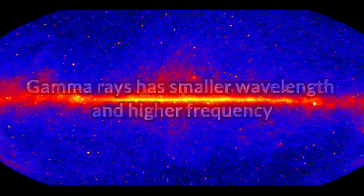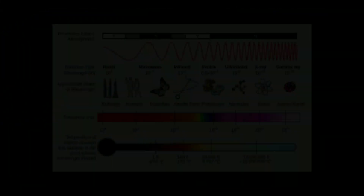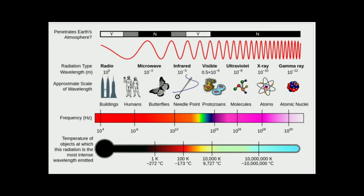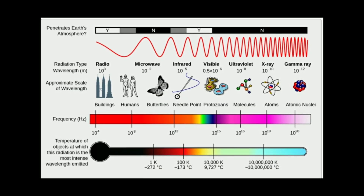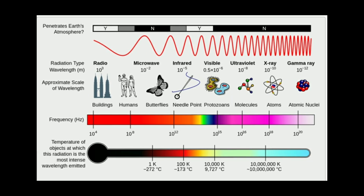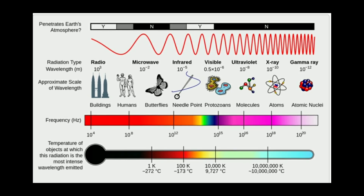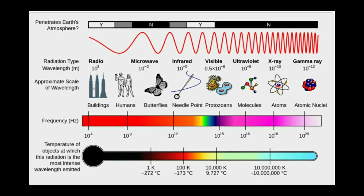Now we can talk about visible light. The wavelength of visible light is 10⁻⁶ m to 10⁻⁷ m.